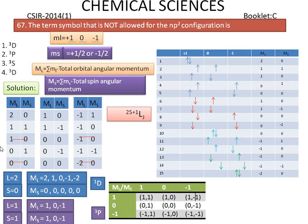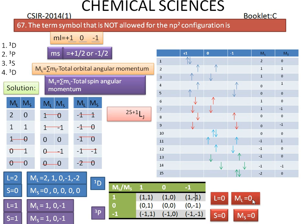The 3P term symbol accounts for 9 microstates with ML values of 1, 0, and -1 combined with MS values of 1, 0, and -1. The remaining microstate has L = 0 and S = 0, giving a corresponding term symbol of 1S.